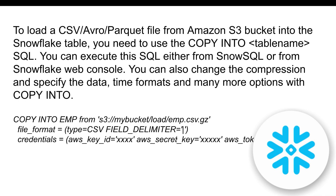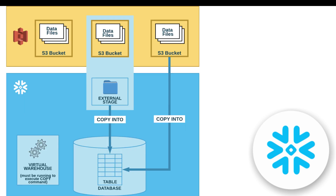This is a bulk load using a COPY activity, assuming you already have an external stage in your S3 bucket and are copying from the external stage into the target table. There is also a diagram showing how you can copy data files present in the S3 bucket into the target table — either directly using COPY INTO or via an external stage.